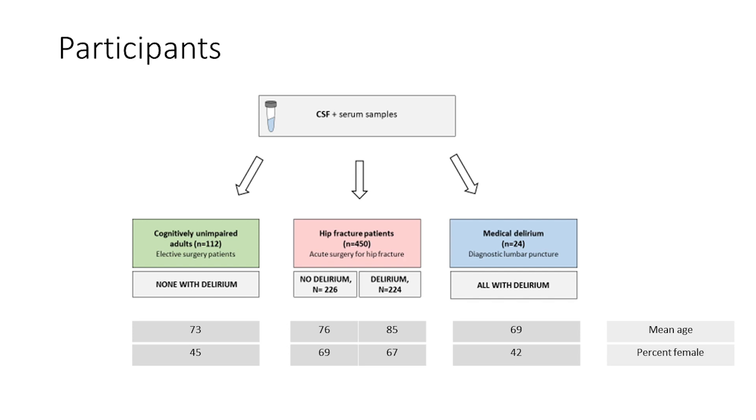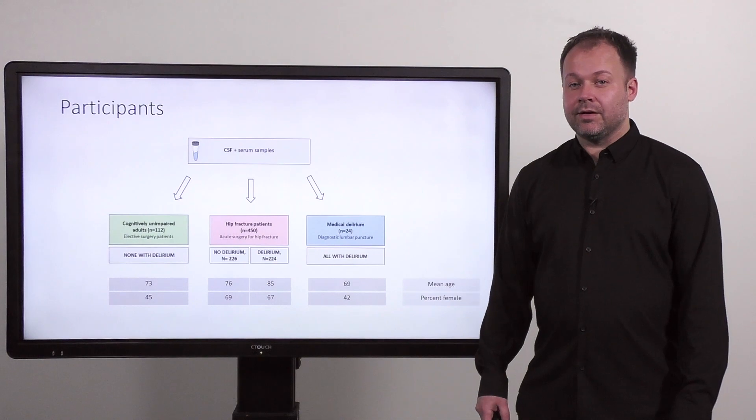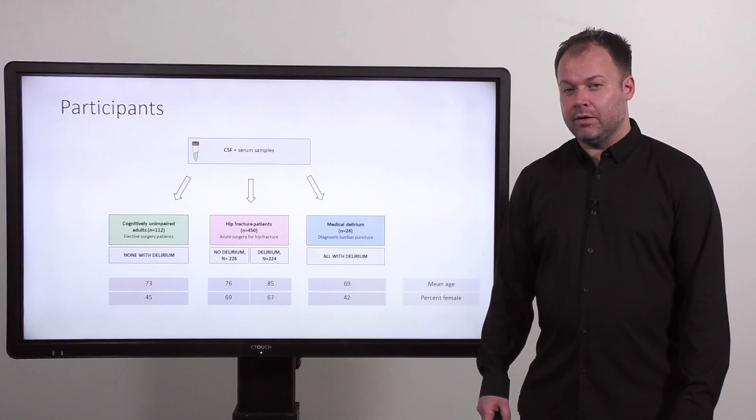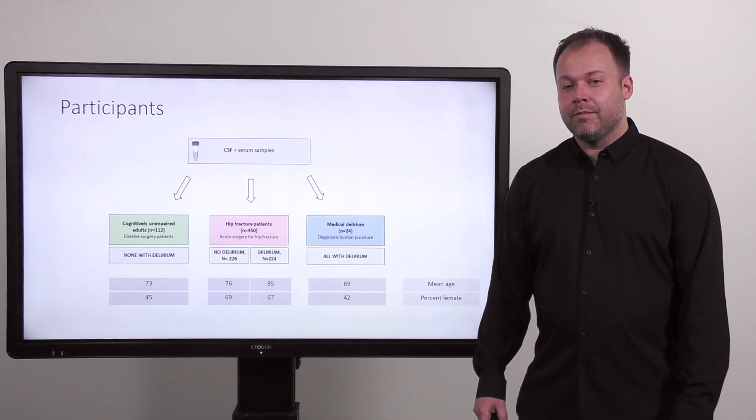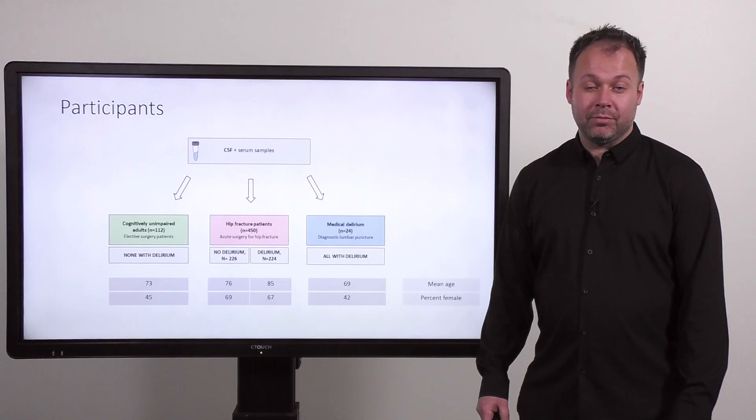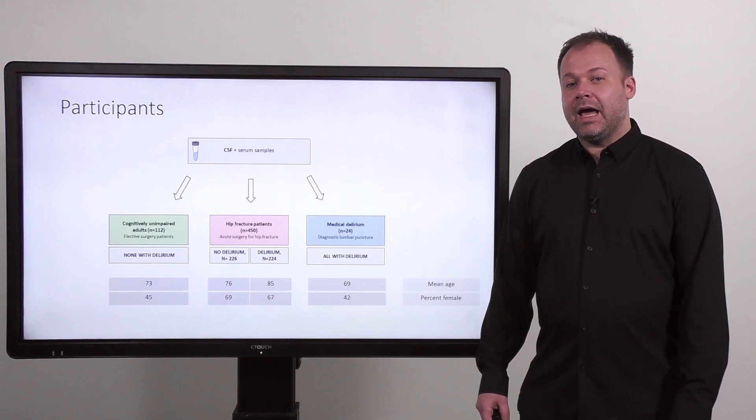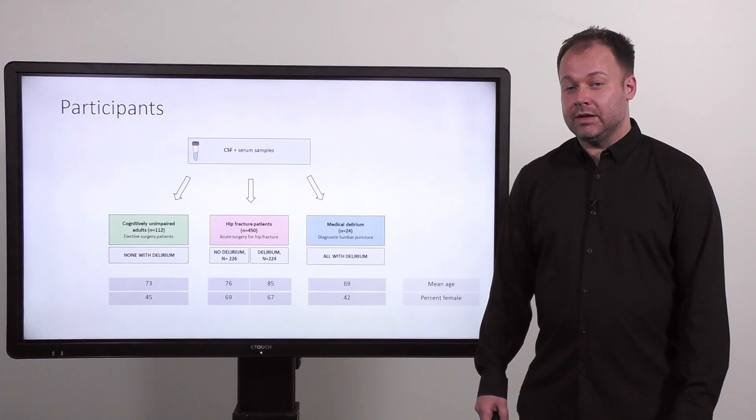And finally, a positive control group with medical delirium. This consisted of patients that underwent lumbar puncture due to symptoms of infection and an altered mental state, but whom ultimately were shown to have delirium and, for example, pneumonia. The age and gender distributions are listed below.